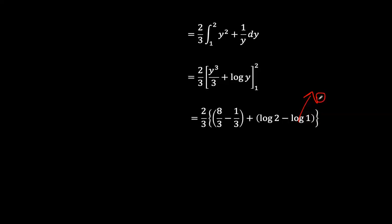natural logarithm of 1 or log of any base of number 1 is 0. And then we're left with now 8 over 3 minus a third is 7 over 3, plus log 2.